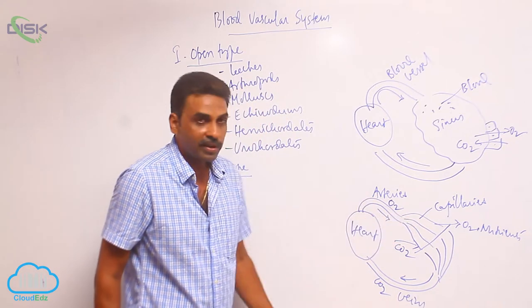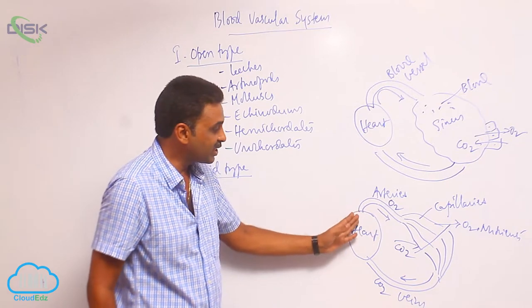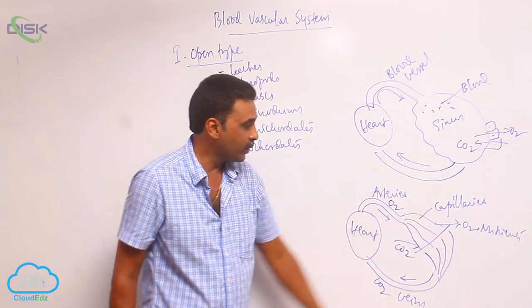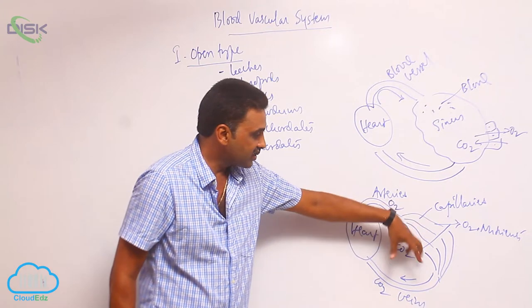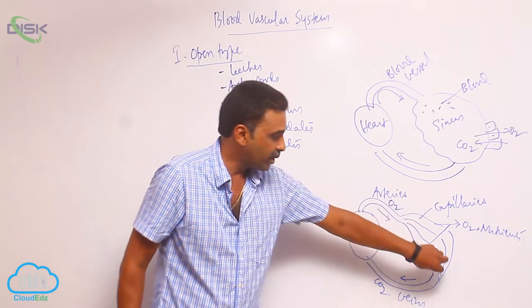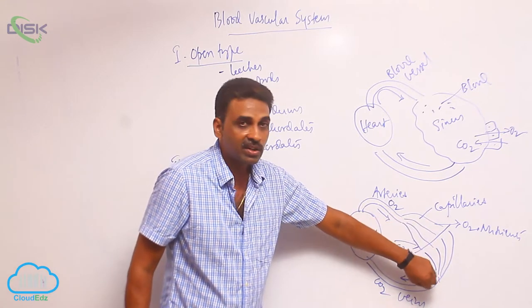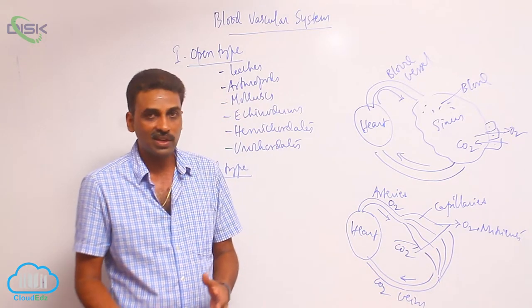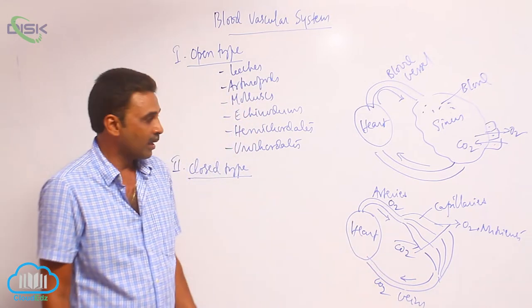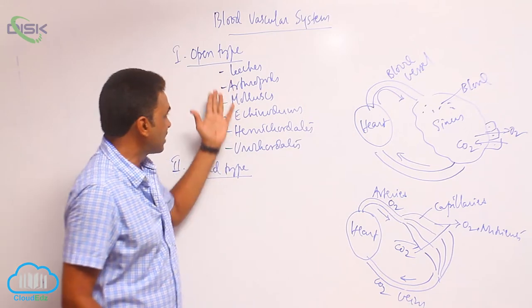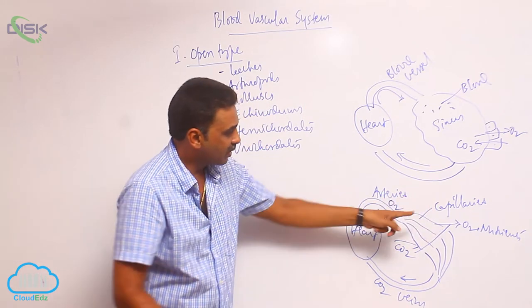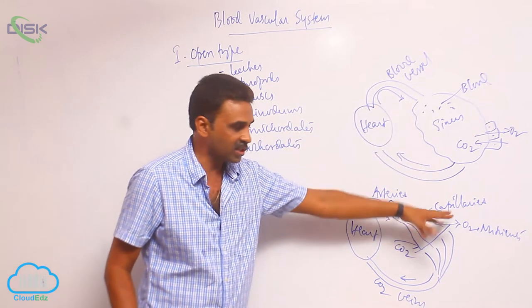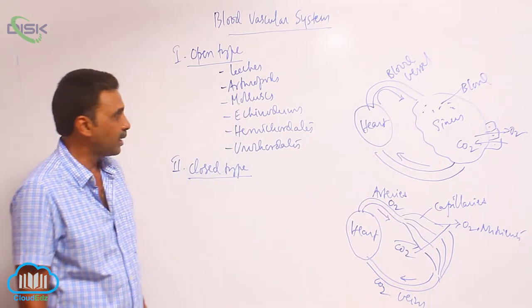The heart pumps oxygenated blood through arteries. Blood vessels that take blood away from the heart are called arteries and generally contain oxygenated blood and nutrients. The arteries divide into capillaries, where exchange of gases occurs — oxygen given, carbon dioxide taken; nutrients given, wastes taken. Capillaries combine to form veins, which carry waste material and carbon dioxide back to the heart. There are no sinuses; it is the closed type of blood vascular system.